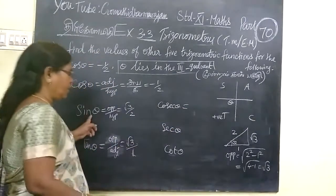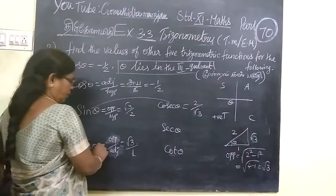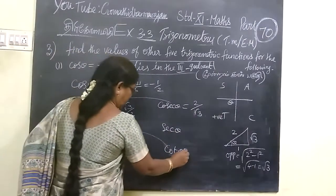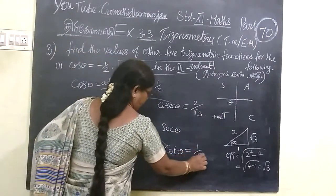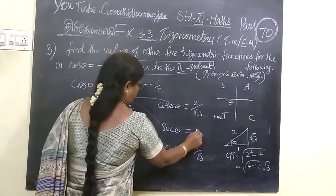Then csc is reciprocal of sin, so you can write 2 by root 3. Then cot is reciprocal of tan, so that you can write 1 by root 3. Then sec is reciprocal of cos, so that you can write 2 by 1.